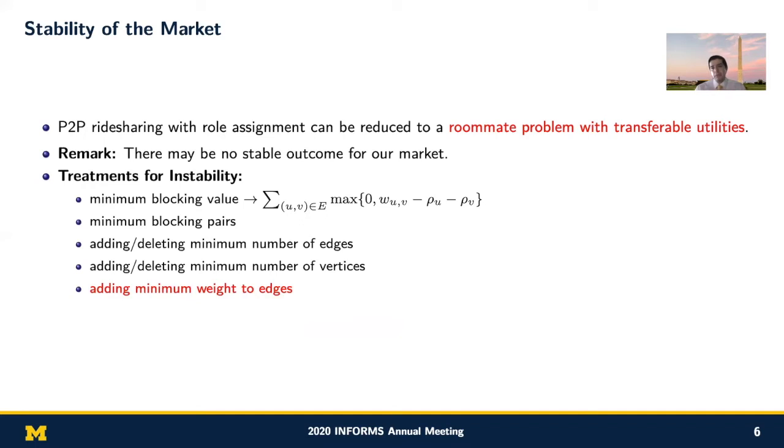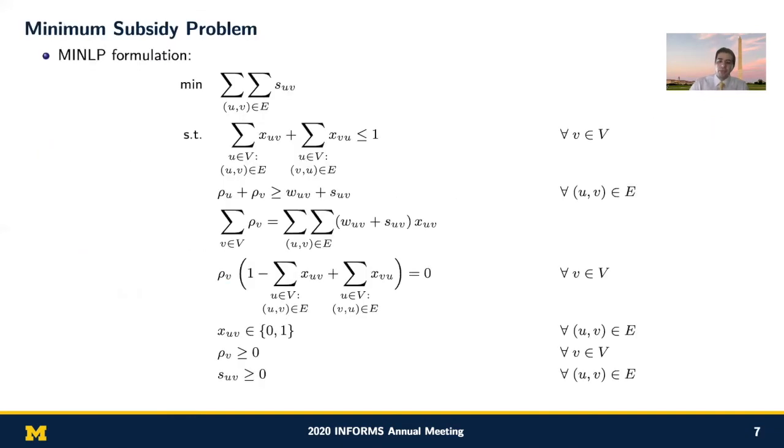These include minimum blocking value or minimum blocking pairs to find near-stable outcomes, or modify the underlying unstable graph to a stable one. For example, adding or deleting a minimum number of edges or vertices, or adding a minimum amount of weights to the edges. I'm particularly interested in the last one because it has a meaning in the context of our ride-sharing system. It can be considered as adding the minimum amount of subsidy to a select set of users to make the ride-sharing market stable. We refer to this problem as the minimum subsidy problem.